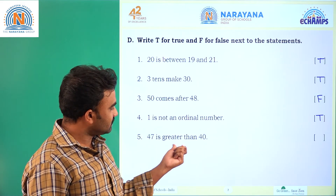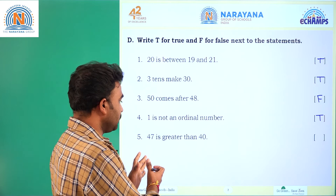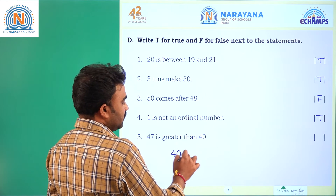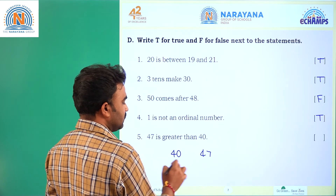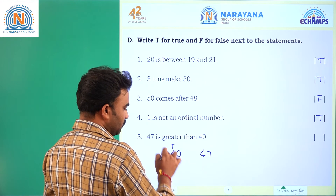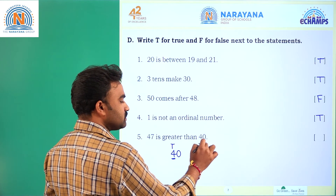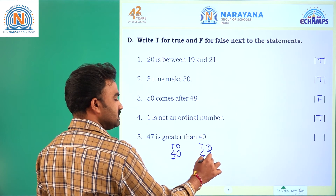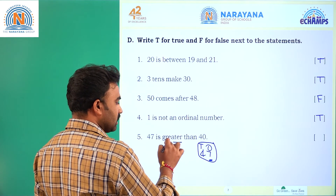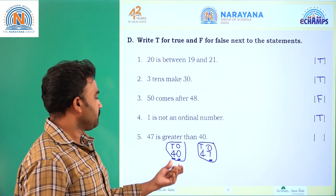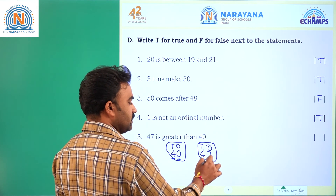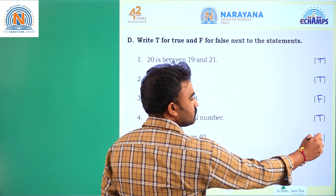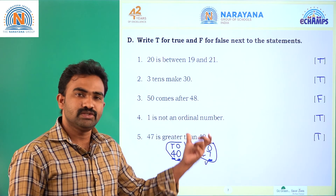Next: 47 is greater than 40. Let's check — the tens place of 47 is 4, and the tens place of 40 is also 4. Coming to the ones place: 47 has 7 ones and 40 has 0 ones. So 47 is greater and 40 is smaller. The statement is correct — true.